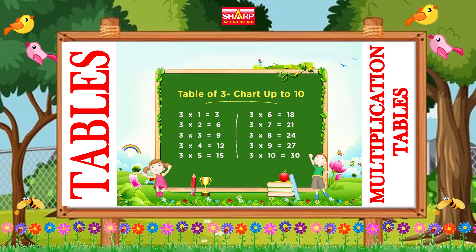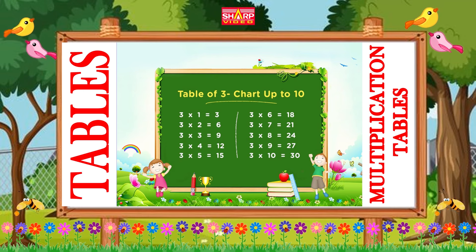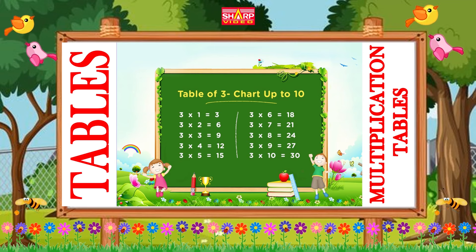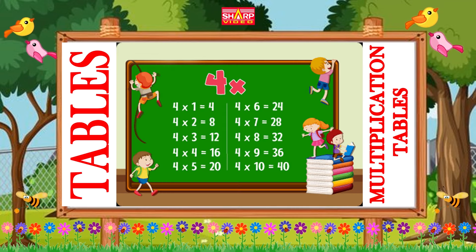Three eights are twenty-four, three nines are twenty-seven, three tens are thirty. Four table,